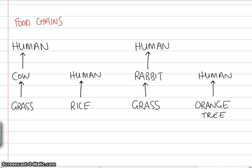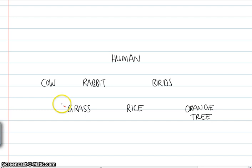So then what we would have, well, the grass is eaten by the cow. It's also eaten by the rabbit. The rice is eaten by the human. Rice is also eaten by the birds. And the birds could also even eat fruit trees. Cows are eaten by the humans, as are the rabbits. Also birds are. And we also eat fruit.